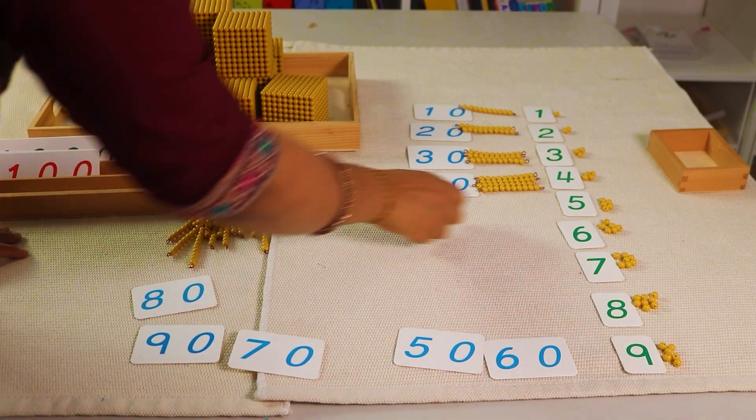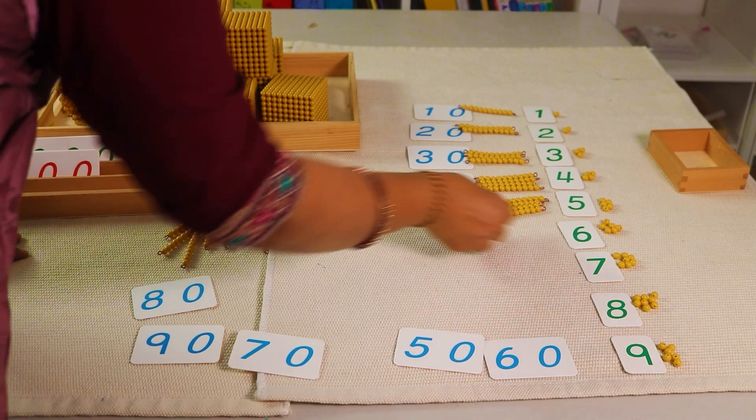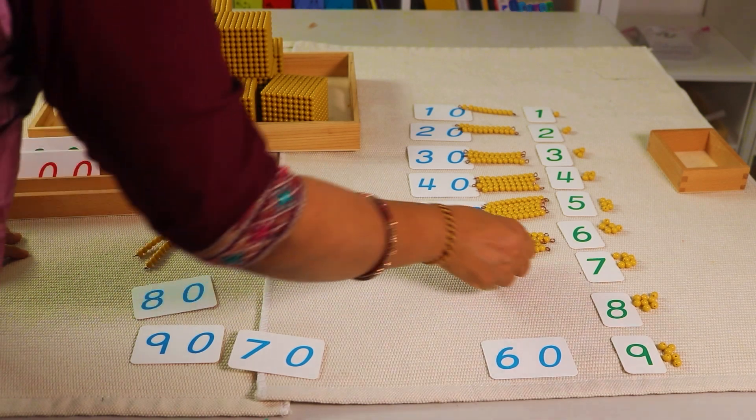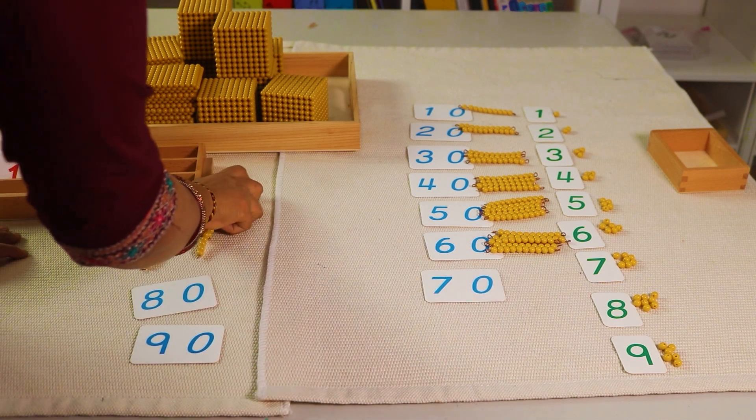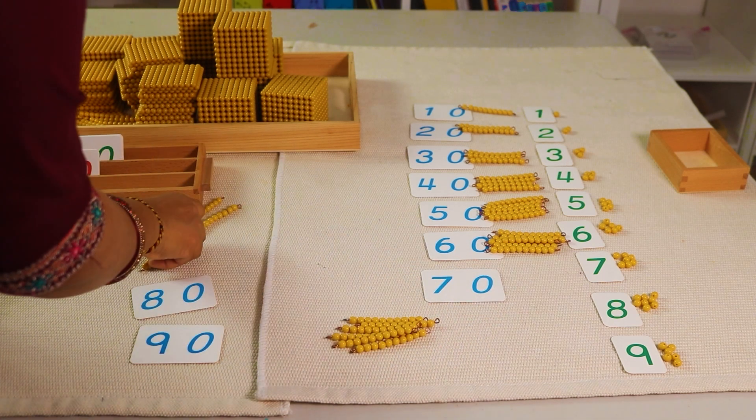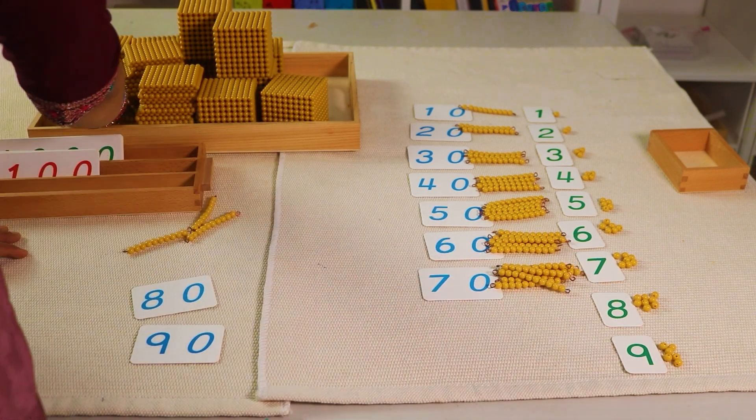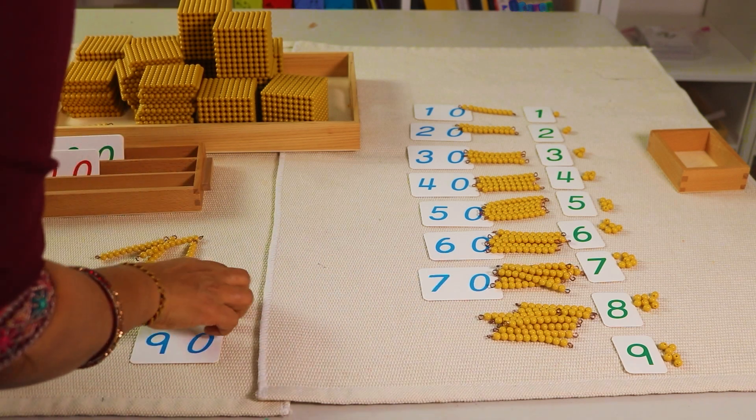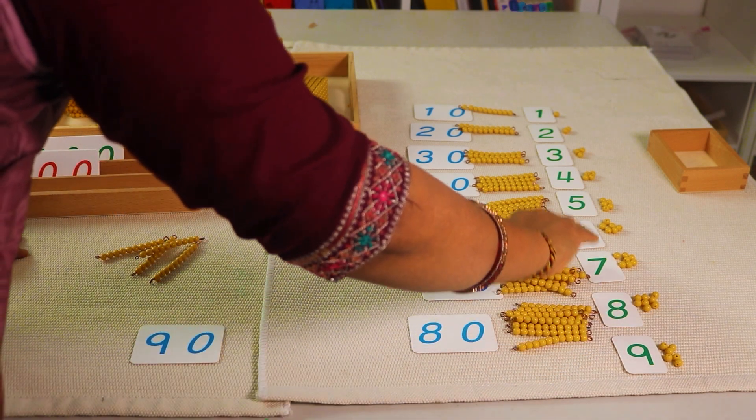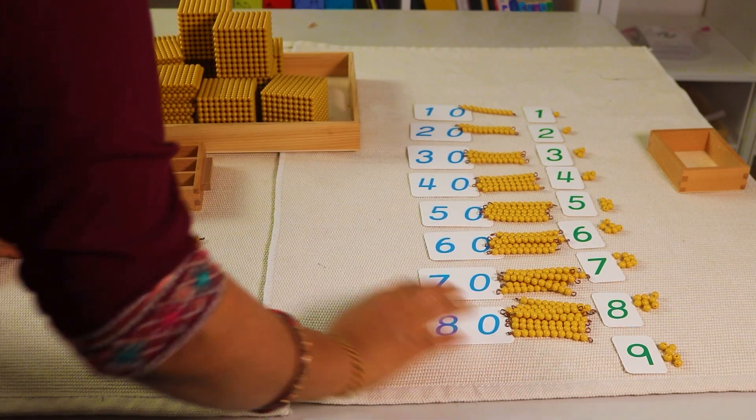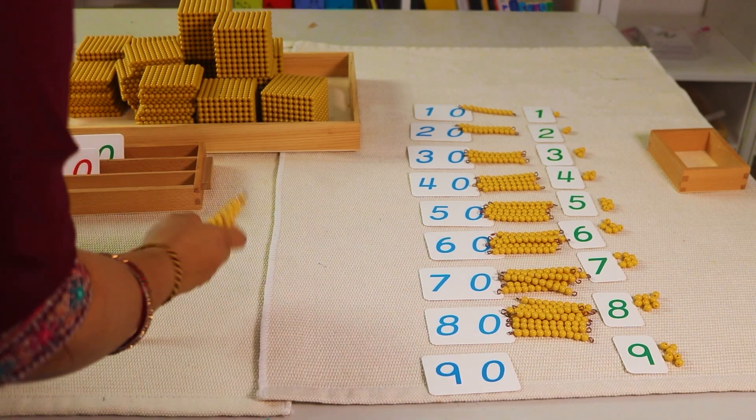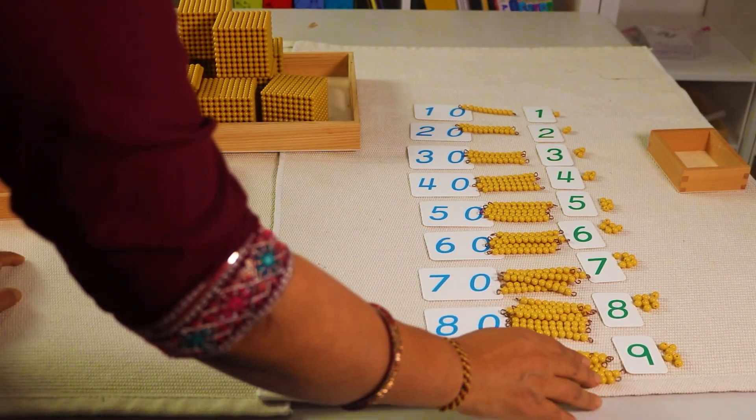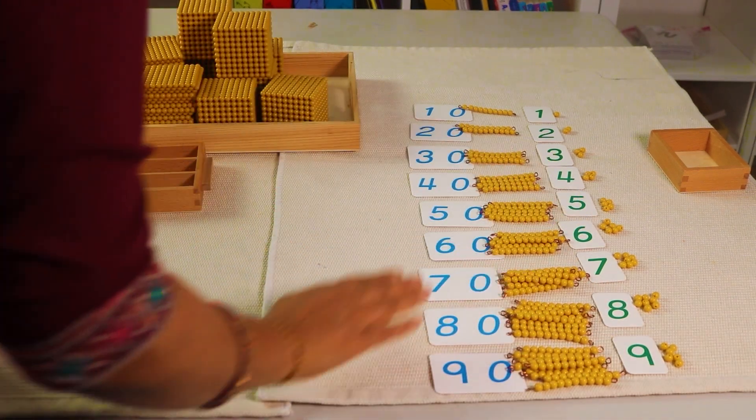What comes after forty? Fifty. What comes after fifty? Sixty. Then seventy, then eighty, and now ninety. Ten, twenty, thirty, forty, fifty, sixty, seventy, eighty, ninety. So this is ninety.